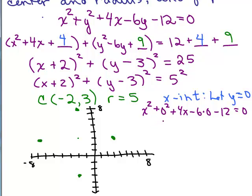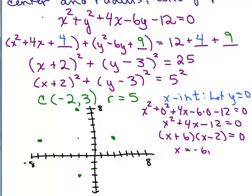I'd have x² + 0² + 4x - 6(0) - 12 = 0. So that gives me x² + 4x - 12 = 0. And if I can factor it, that would be awesome. I think I can. I think it's (x + 6)(x - 2) = 0. So x is -6 or 2. So that's two ordered pairs. One of the ordered pairs would be (-6, 0), and the other one would be (2, 0).